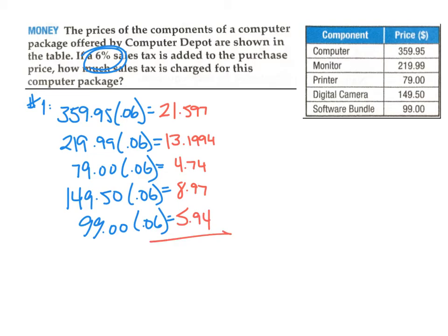Instead of going through each individually, we calculate them all and add them together. For example, $359.95 times 6% gives $21.597, which has too many digits after the decimal for a money context. We can truncate or round to two decimal places — either approach is fine. Similarly, $13.1994 gets truncated. After calculating the 6% of each item and adding them all together, we end up with $54.44 in total sales tax.